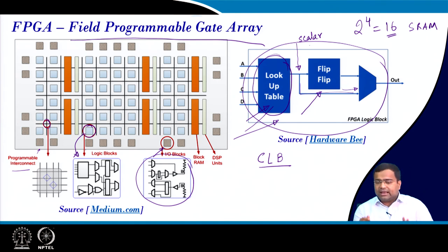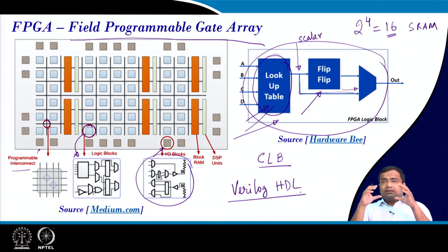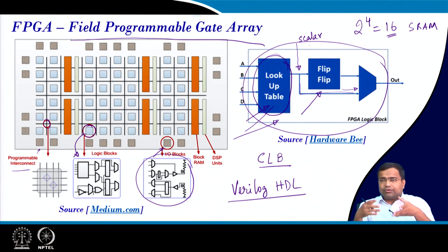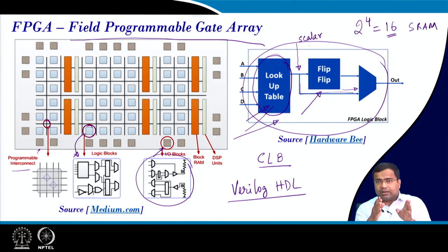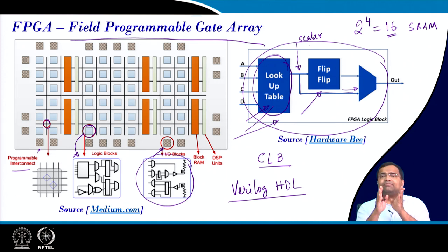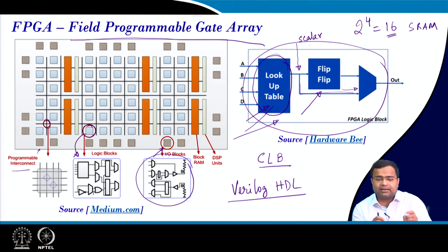When you learn HDL coding — specifically Verilog HDL, which we will learn in this course — Verilog HDL is a software platform language that enables you to write your own digital algorithm and develop it. Once you synthesize this, it has to be implemented: either you can go for FPGA or you can go for ASIC. Accordingly, based on the platform, the implementation flow will create a netlist and routing, then generate a bitfile that is dumped to make the interconnects accordingly.